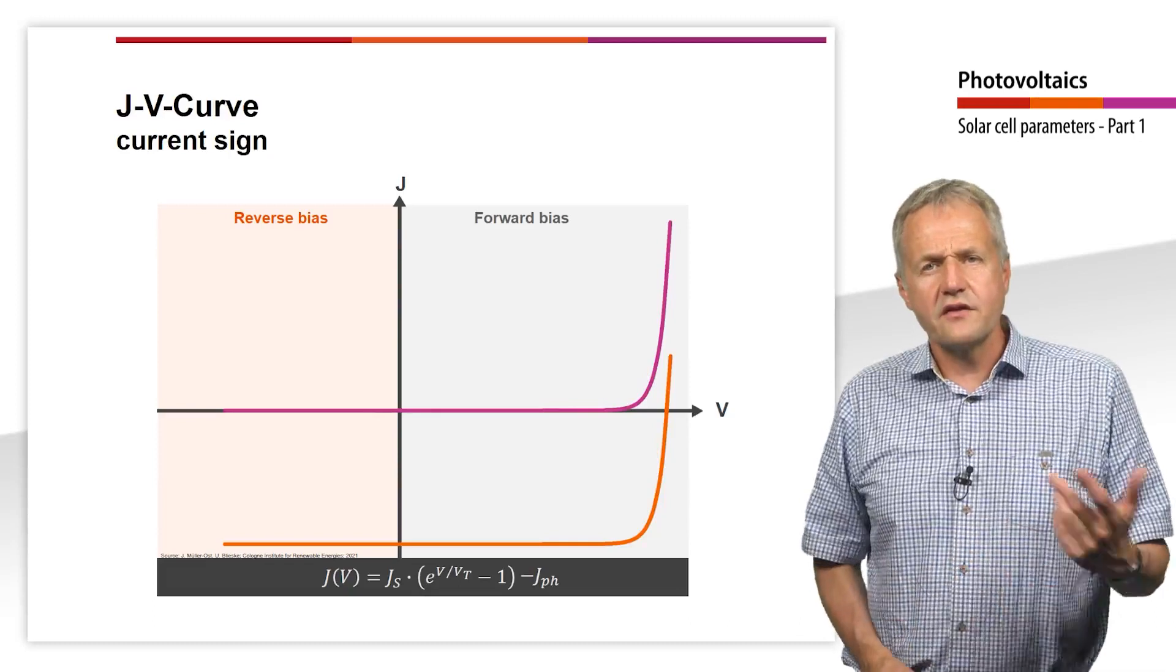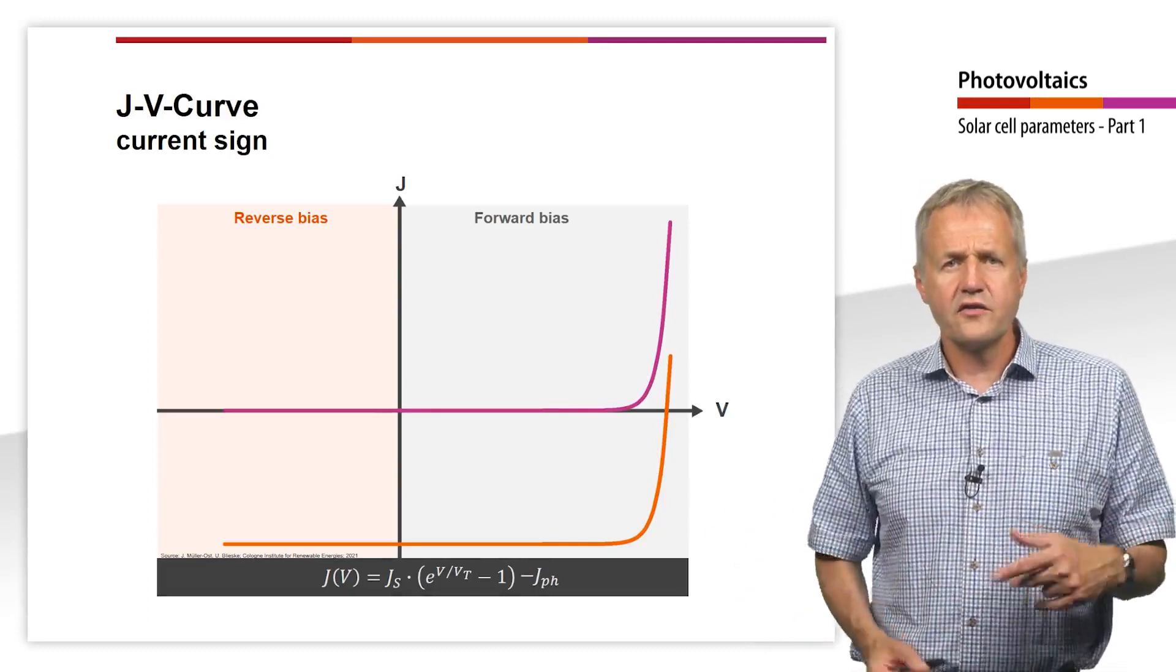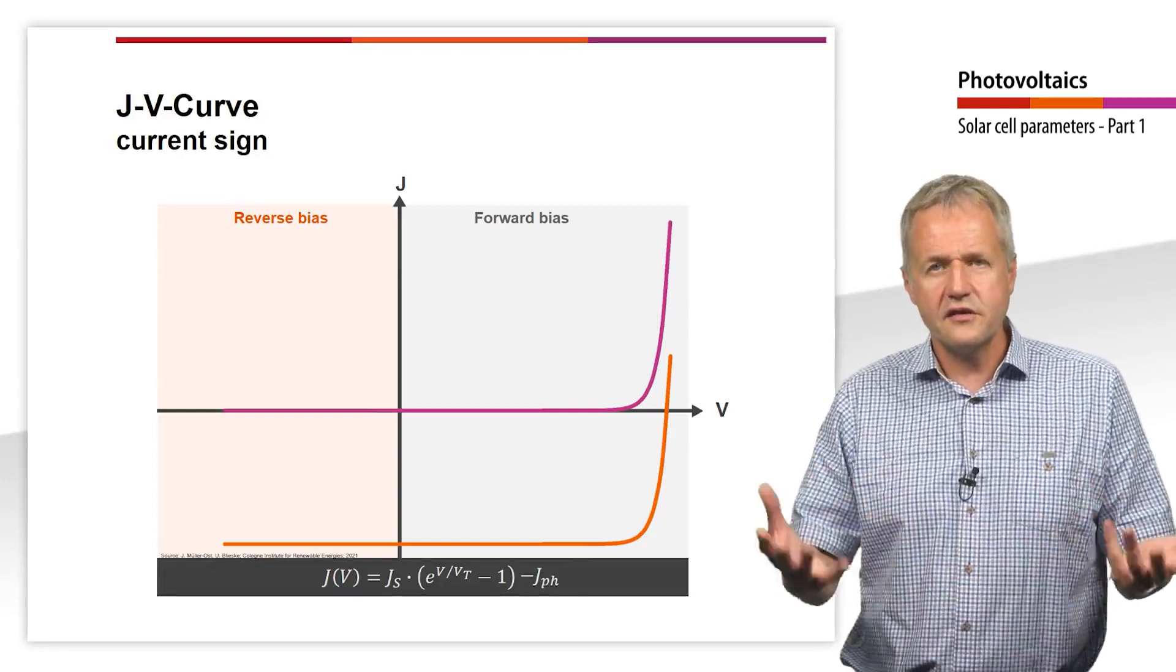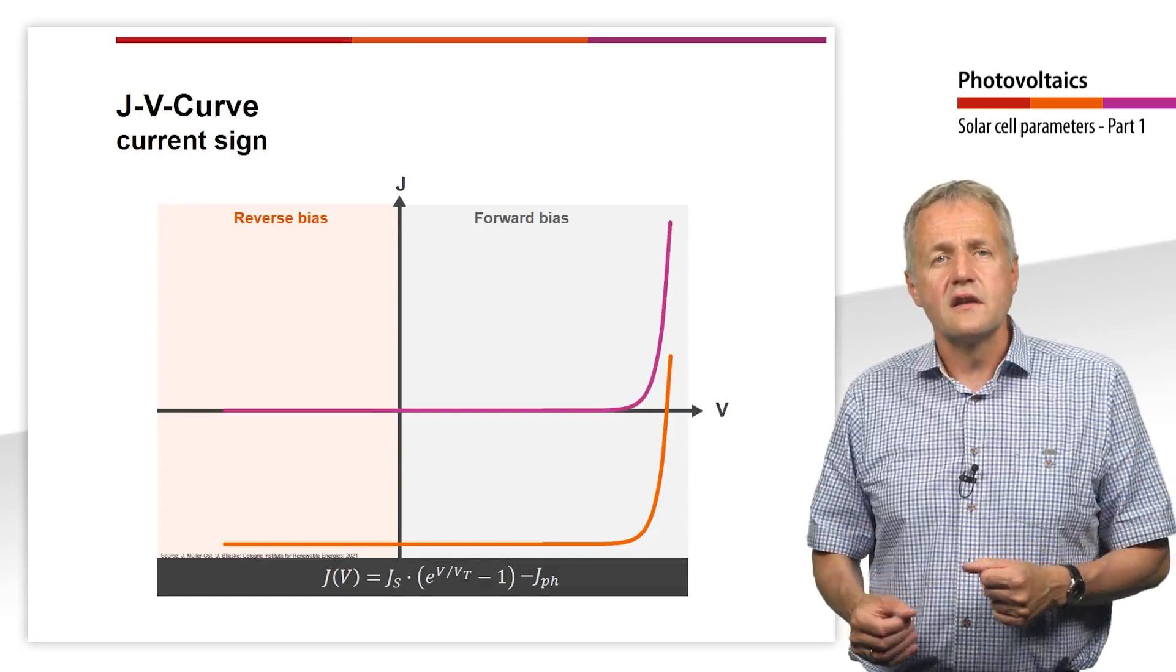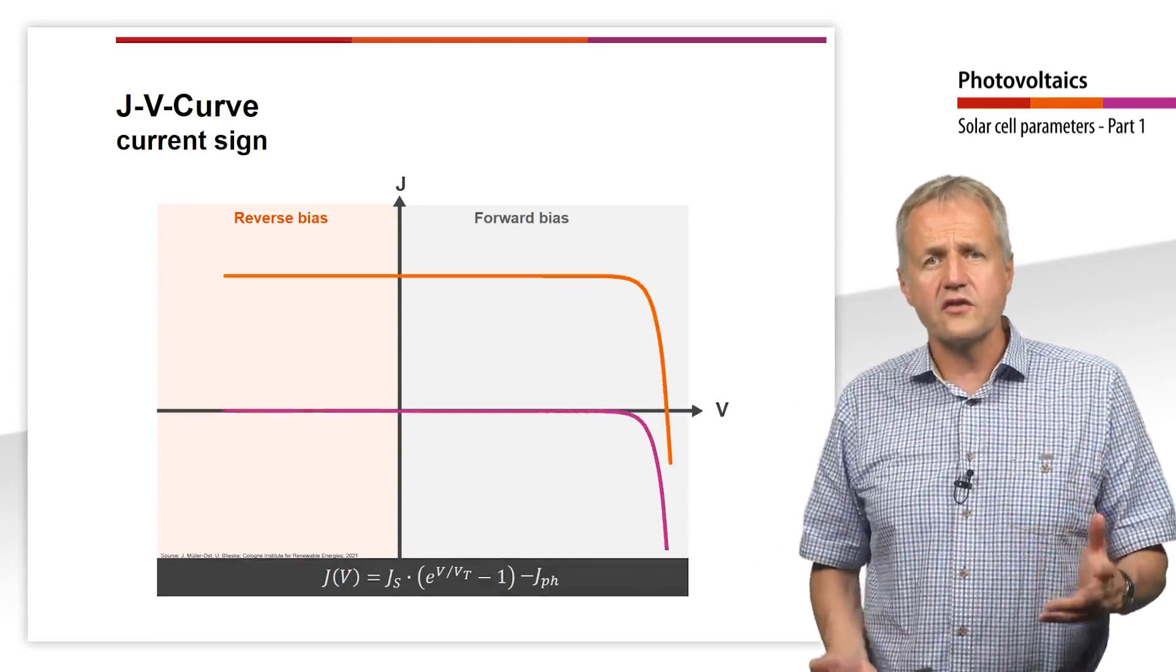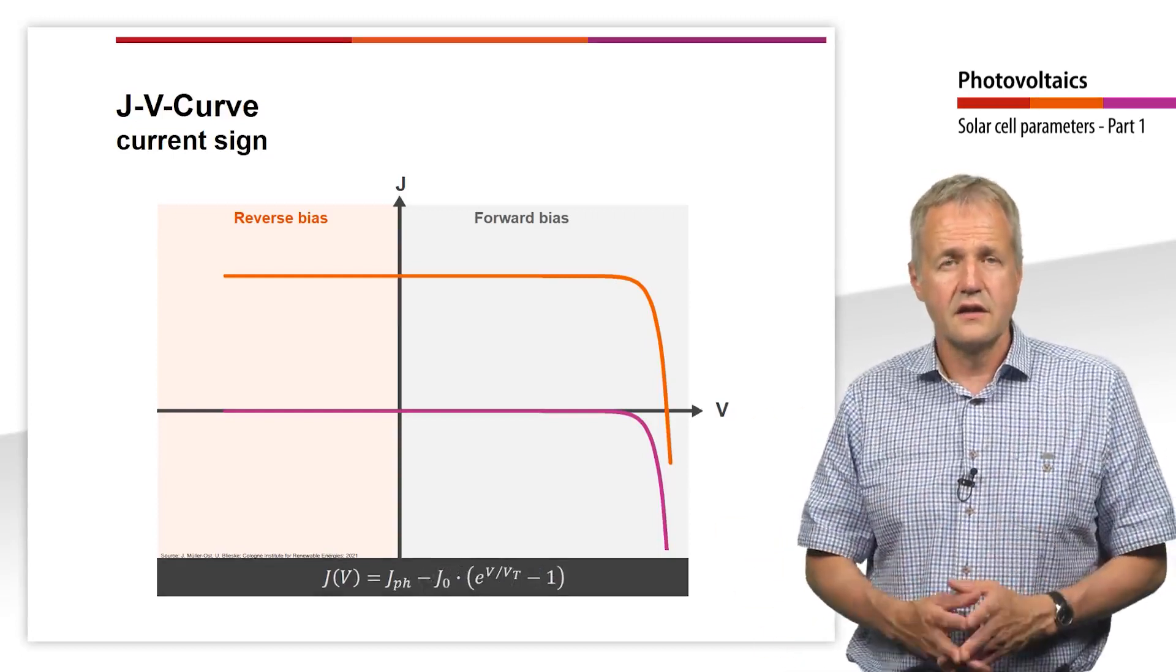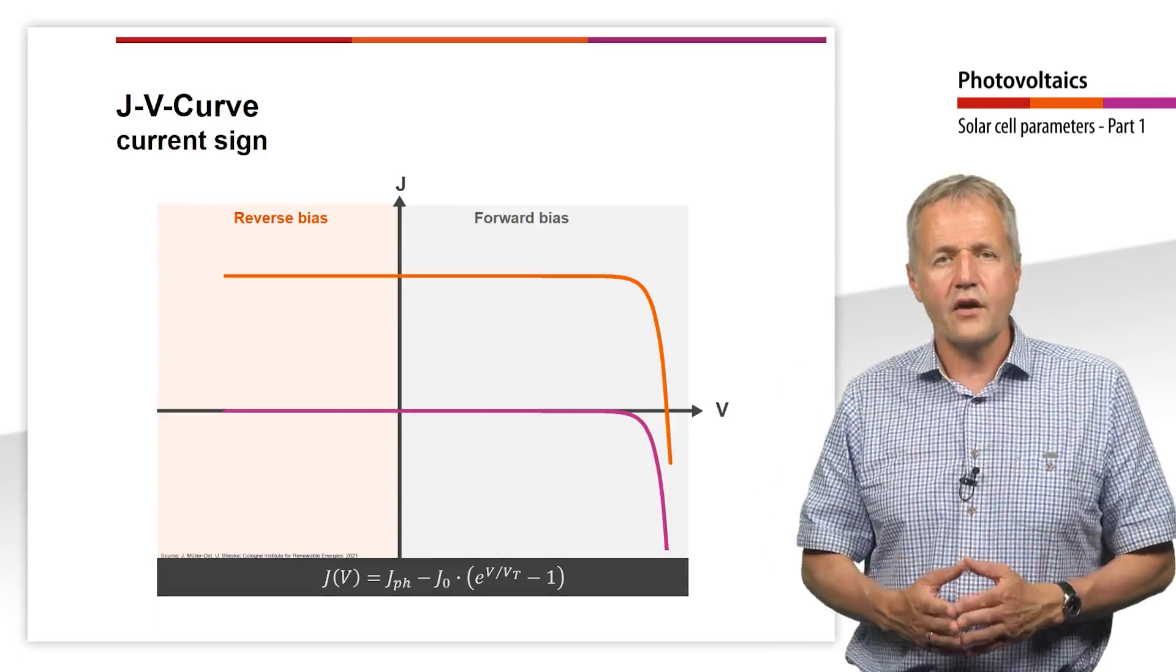In the characteristic curve shown, the electricity generated by the solar cell is counted negatively. As long as we looked at the behavior of the solar cell as a consumer, that was correct, since the power consumed voltage times current is positively defined for a consumer. If we consider a generator, we usually reverse the way the current is counted, so that the generated current is positive and the consumed current is negative. This means that the generated power is counted positively and the consumed power is counted negatively. In the mathematical description, the signs of the currents are also reversed in this way of counting.